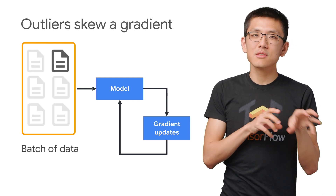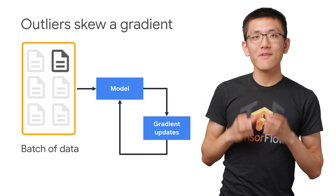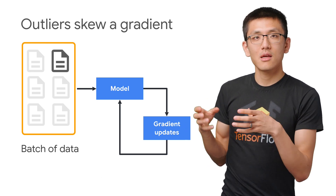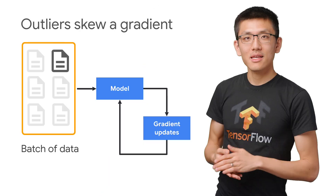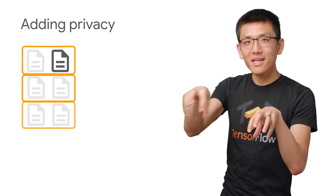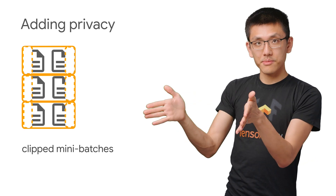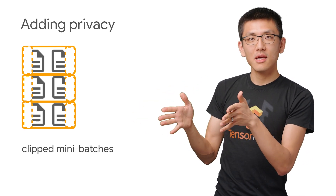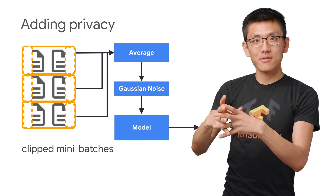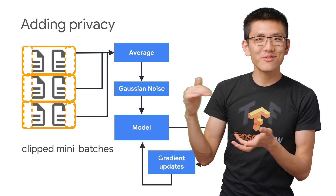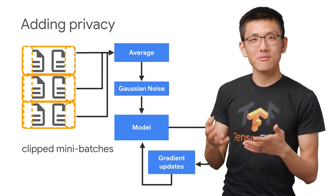TensorFlow Privacy makes a few small but key tweaks to how that gradient is computed. If a single example is providing an outsized effect on the model's gradient, it may cause it to stick out and potentially be exposed in the trained model. TensorFlow Privacy addresses this by averaging together multiple mini-gradient updates on a subset of the full batch. Each mini-gradient's value is clipped, limiting its range of possible values and restricting individual impact. These mini-gradients are then averaged together, and finally we add some Gaussian random noise on top of this average — ensuring no individual example will be memorized by the model.